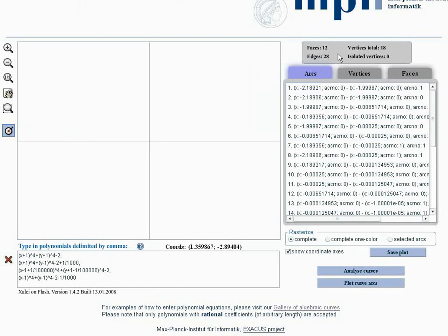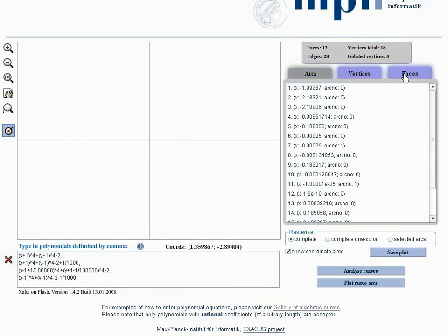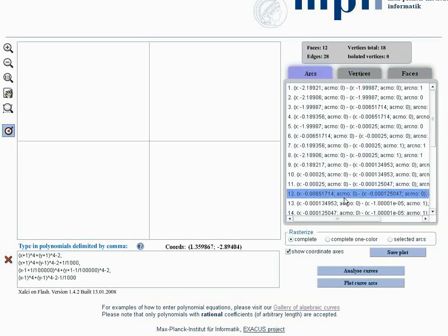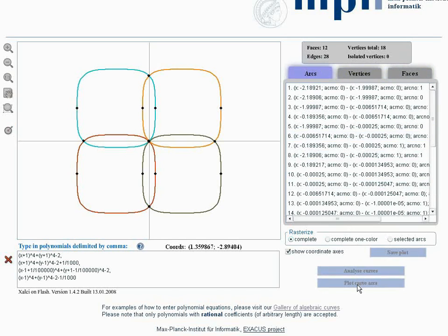The total number of features is shown on top and more geometric information on every component is available. The Plot button triggers the visualization method. The resulting picture displays the input curves accurately and the exact topology is preserved.